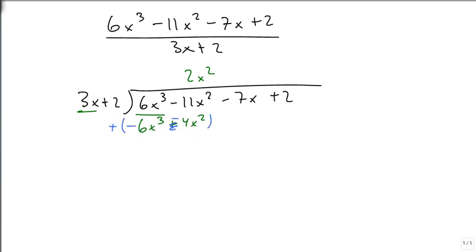So we change our signs. 6x cubed minus 6x cubed is 0x cubed, so we don't need to write anything. Minus 11x squared minus 4x squared is minus 15x squared. And we bring down the minus 7x. We repeat the process.